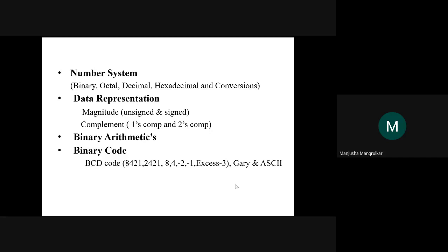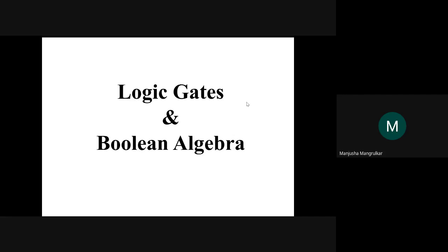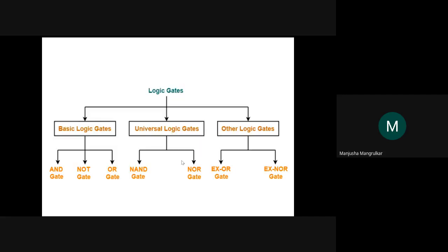Now in this lecture we are going to see logic gates and Boolean algebra. There are three types of gates: basic gates — AND, NOT, OR — universal gates — NAND and NOR — and other gates: XOR and XNOR.